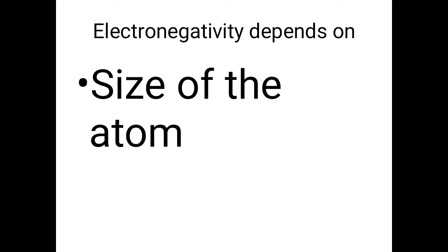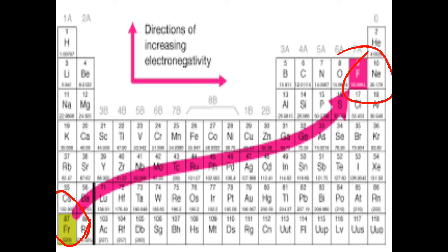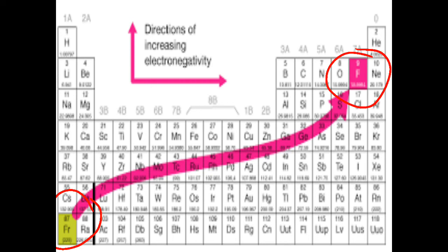Electronegativity values again depend on the size of the atom. Fluorine, the top member of group 7A with atomic number 9, is the smallest atom in its period and shows the maximum electronegativity on the Pauling scale. Cesium and francium, being the largest atoms, show the least electronegativity on the Pauling scale.